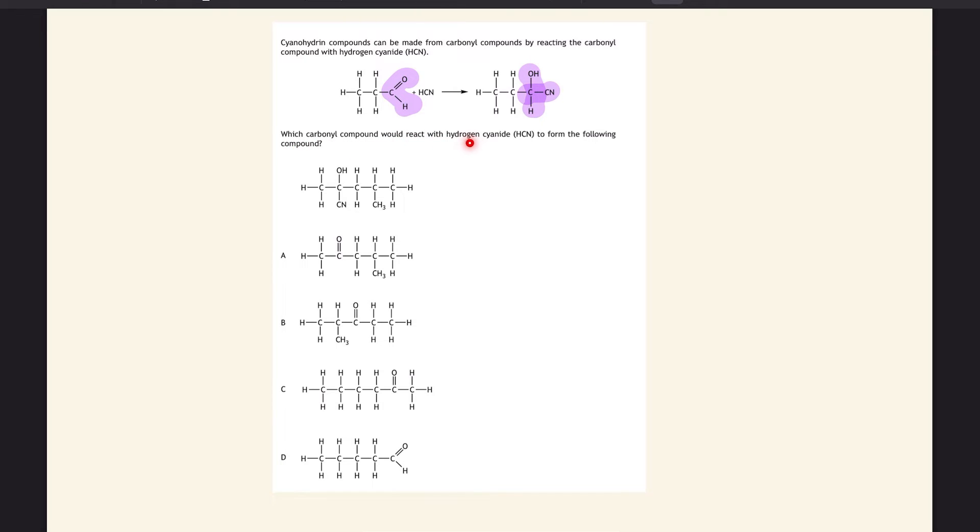It asks which carbonyl compound would react with hydrogen cyanide to form this. Looking at the example, where the carbonyl group is is where the OH and CN ended up. If we highlight where the OH and CN is, that's where we want our carbonyl, and the rest of the molecule should be exactly the same. We need the carbonyl on the second carbon, so that rules out this one and this one. This one doesn't have a CH3 branch, so our answer has to be A.